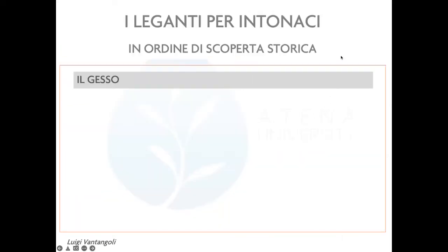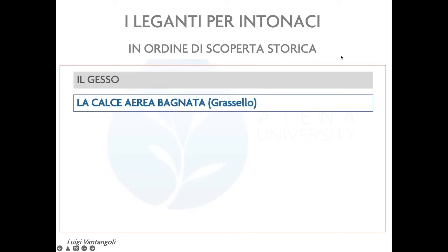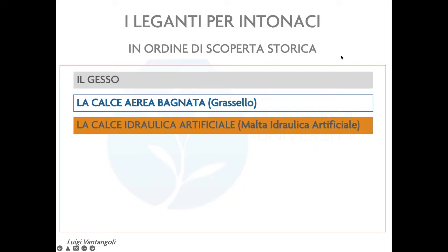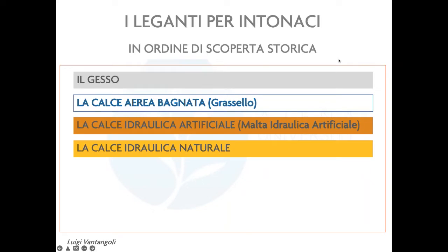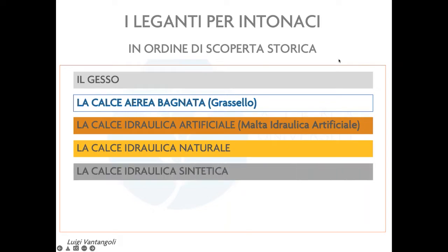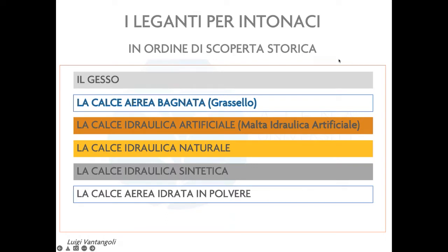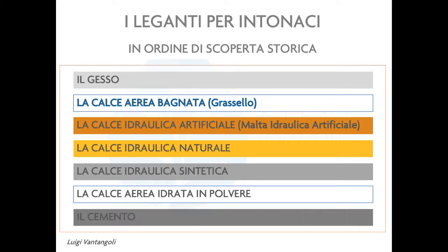Andiamo in ordine di scoperta storica per i leganti: partiamo dal gesso, poi la calce aerea bagnata cioè il grassello, la calce idraulica artificiale — meglio definirla malta idraulica artificiale — la calce idraulica naturale, la calce idraulica sintetica, la calce aerea idrata in polvere come prodotto contemporaneo, e il cemento.